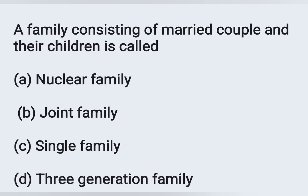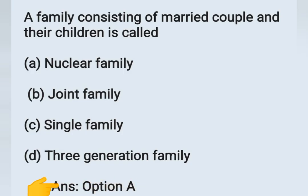The next question: a family consisting of a married couple and their children is called — Options: A) Nuclear family, B) Joint family, C) Single family, D) Three-generation family. A family with a couple — father and mother — and their children is called a nuclear family. Option A is the correct answer.